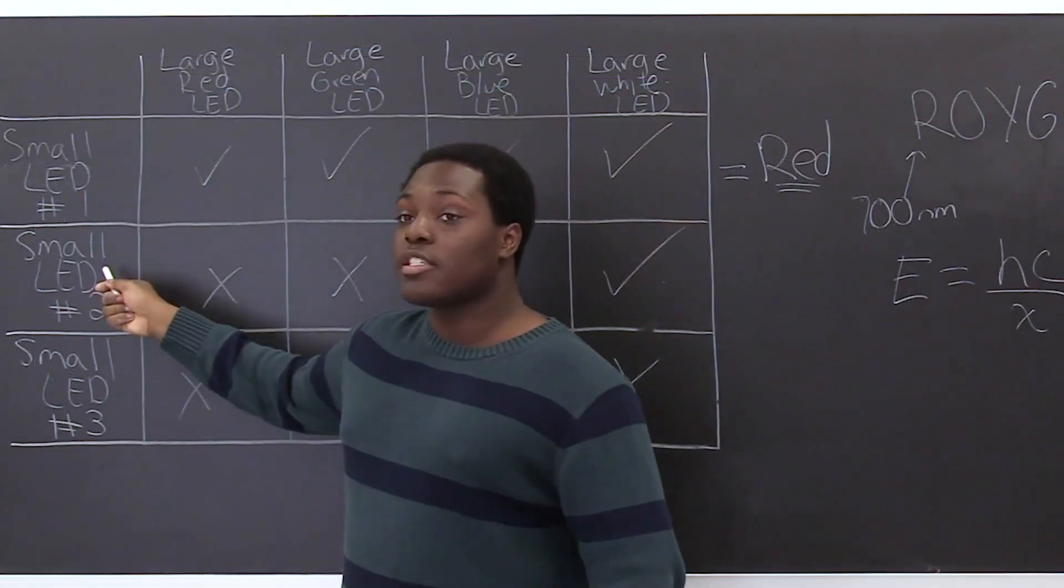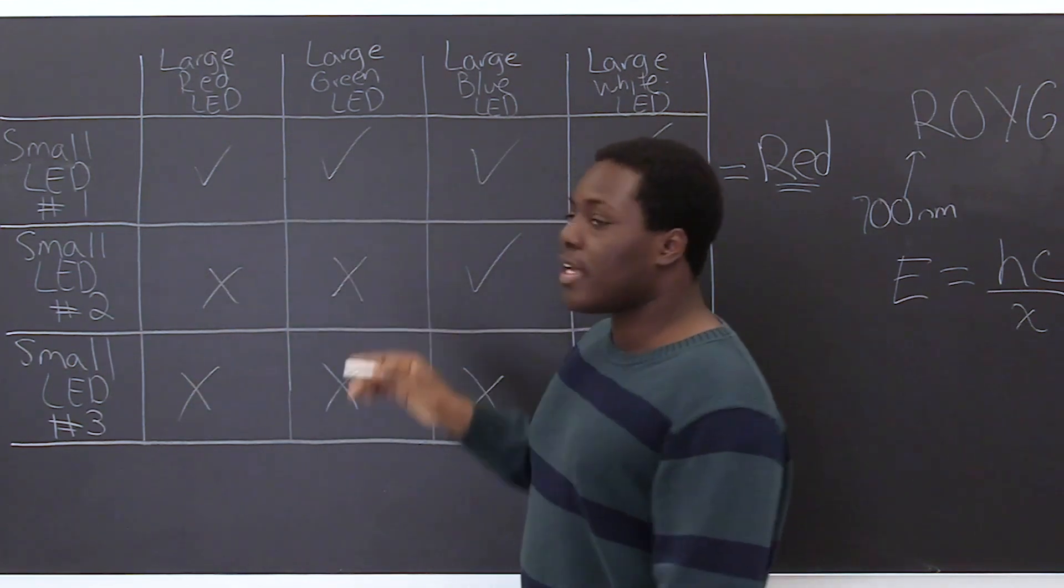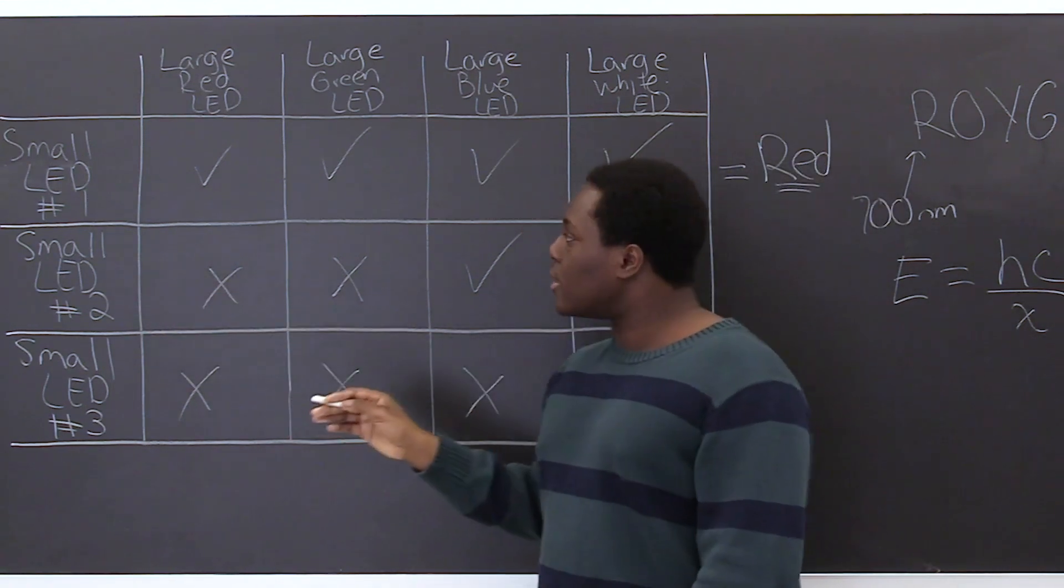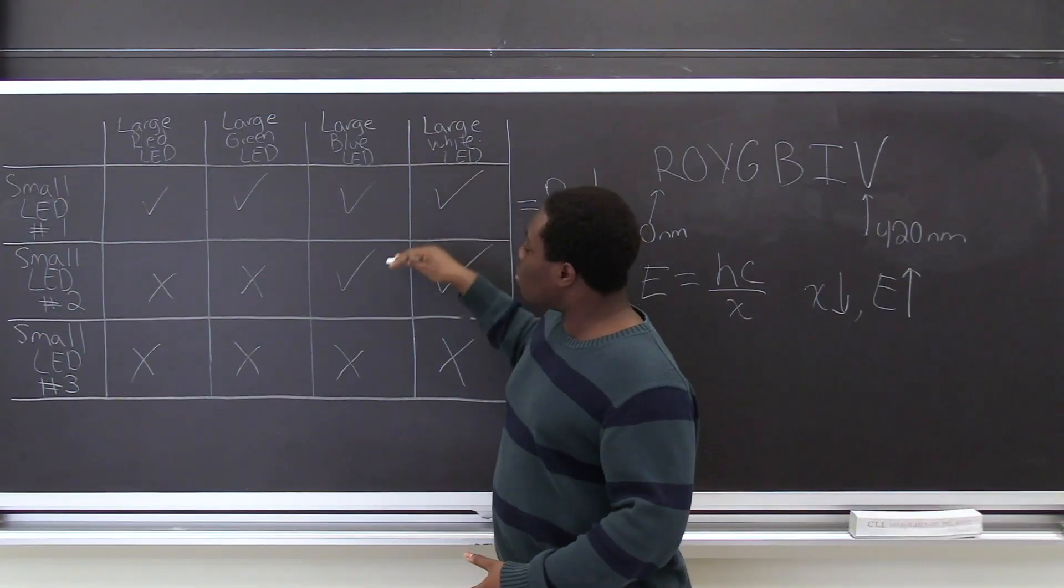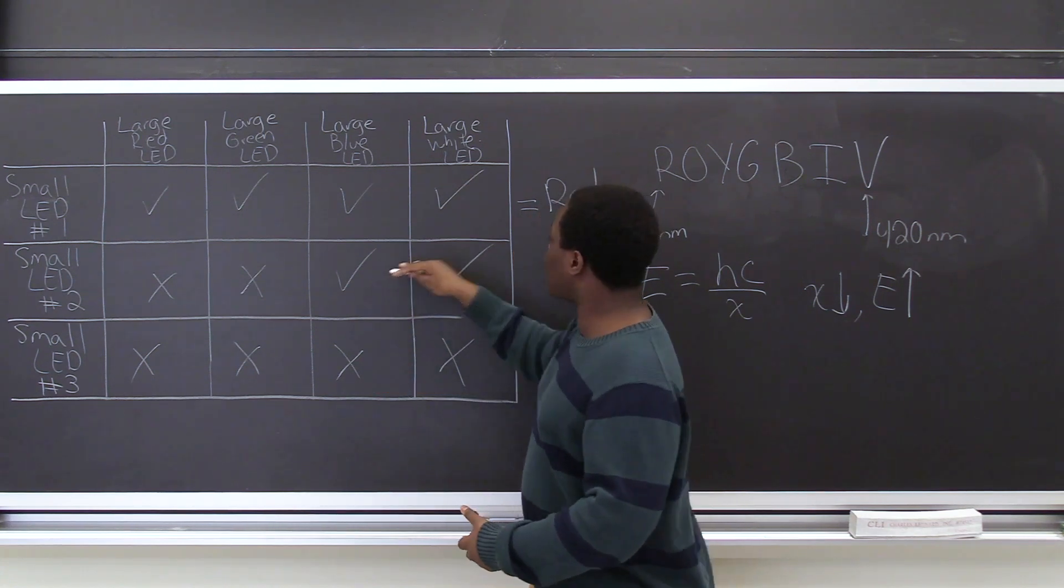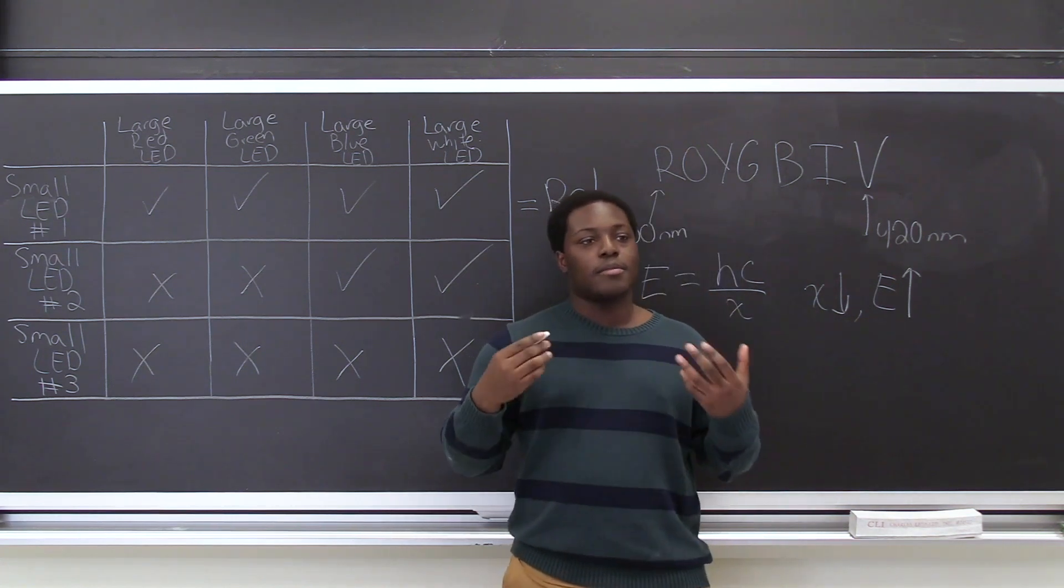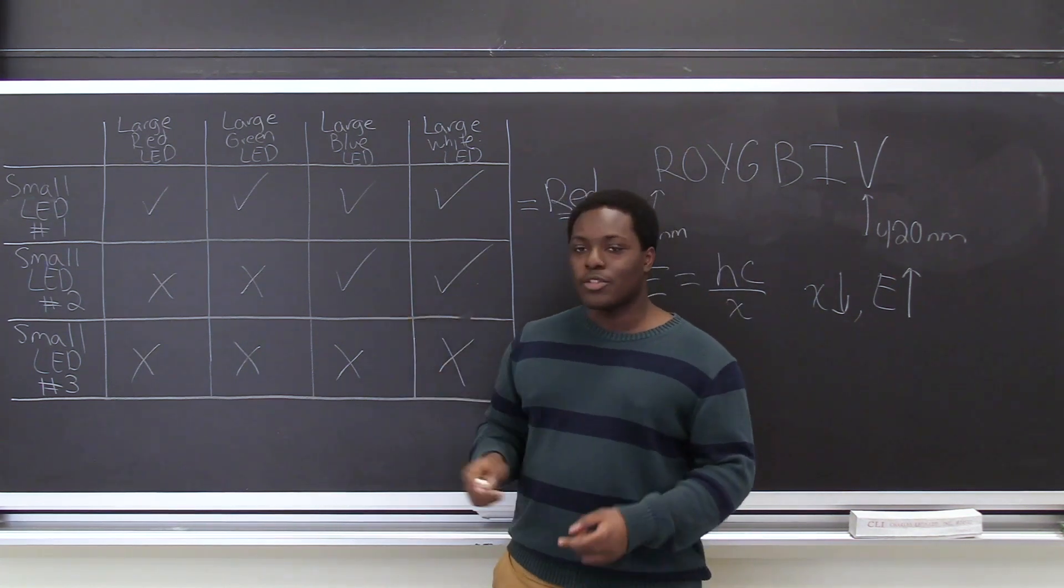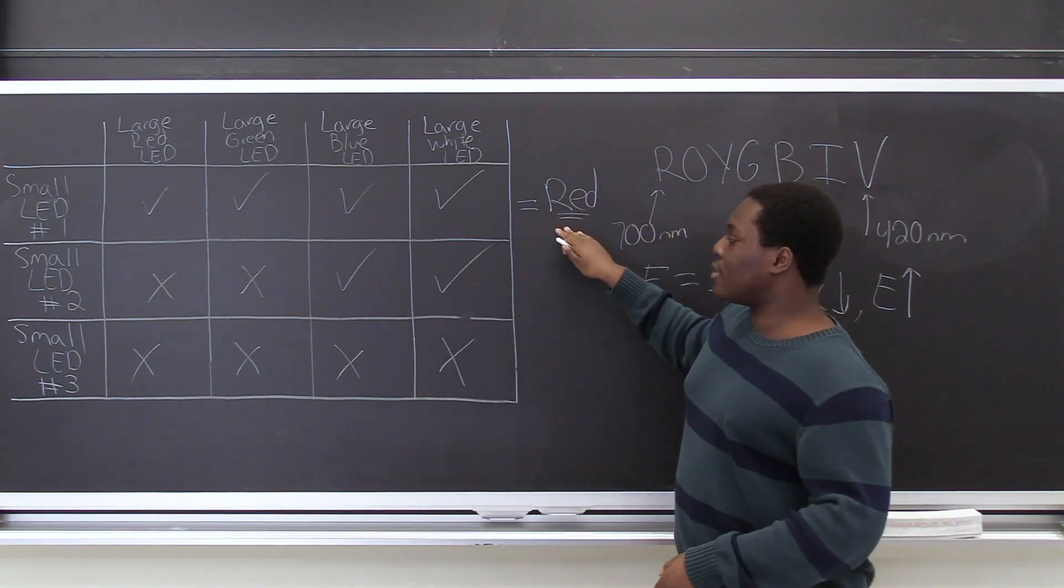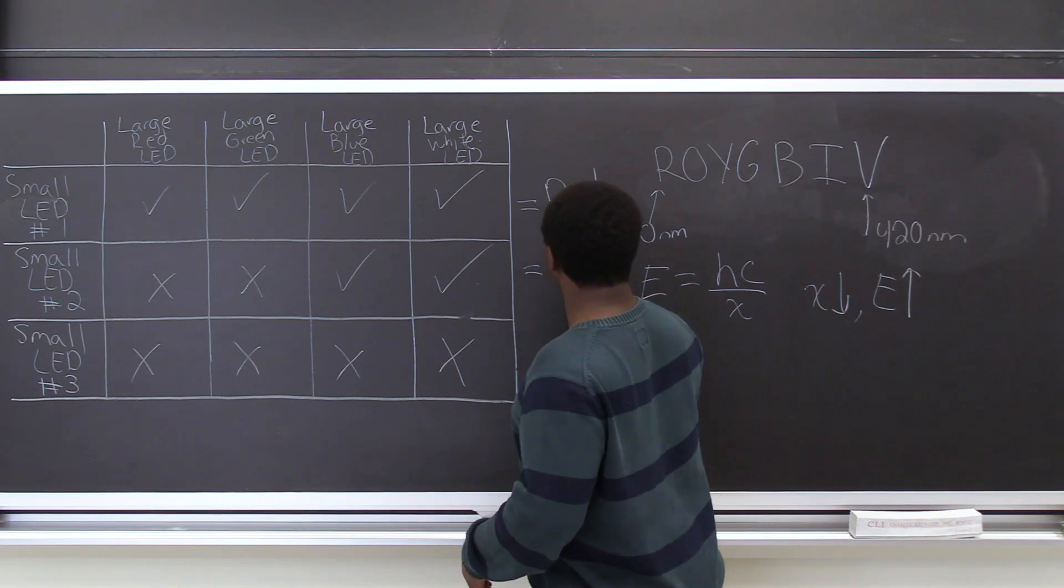So if we look at small LED two we can see that both red and green light did not have enough energy to excite electrons across the band gap of the second LED. But when we shine blue light onto the LED we got a non-zero voltage drop and the same thing when we shine white light which also has blue light in it. Because like I said in the beginning we knew that our small LEDs were red blue and purple and we've already found our red LED. That means that this LED must be the blue.